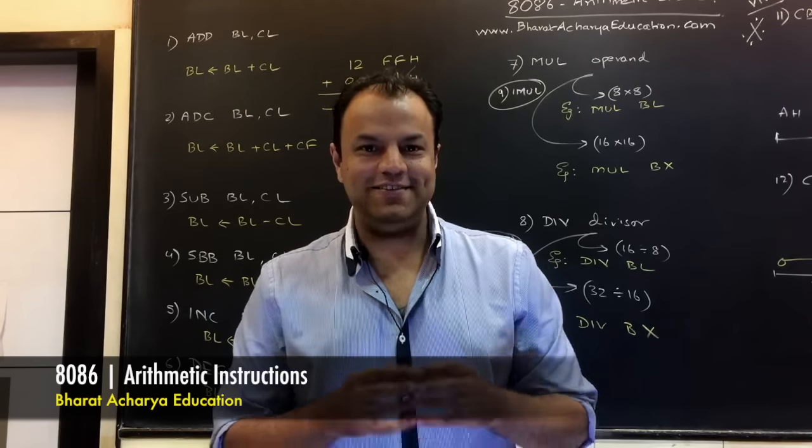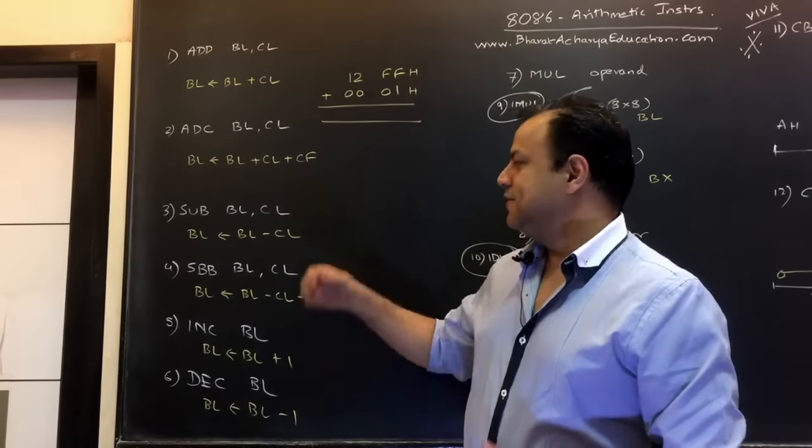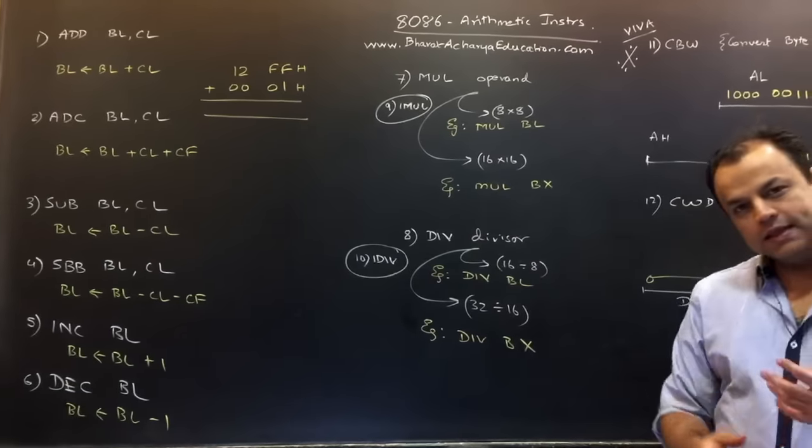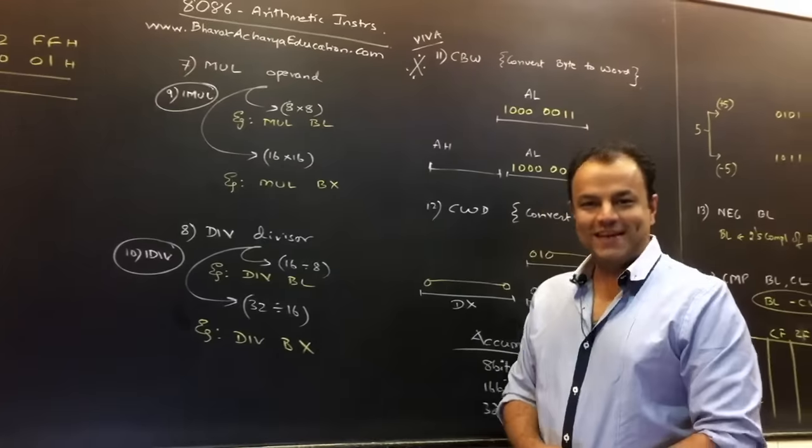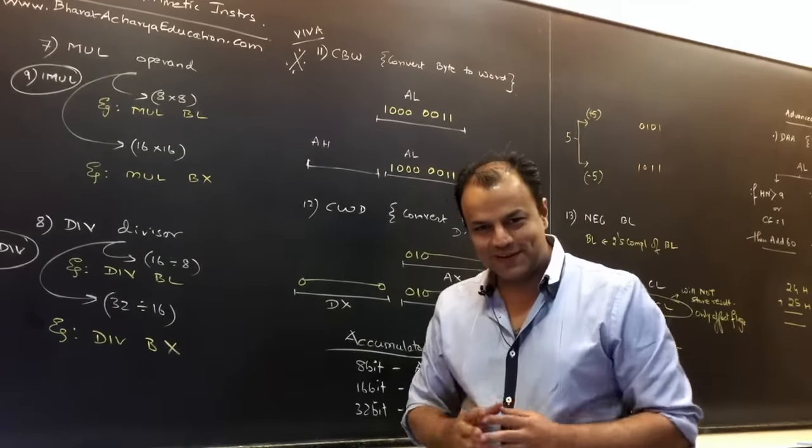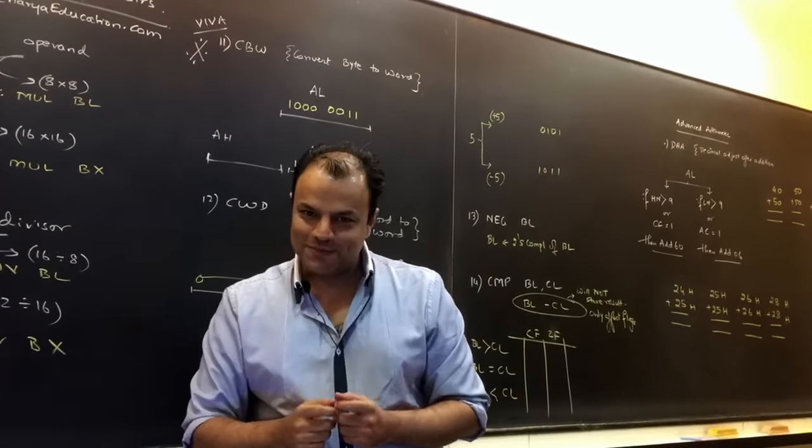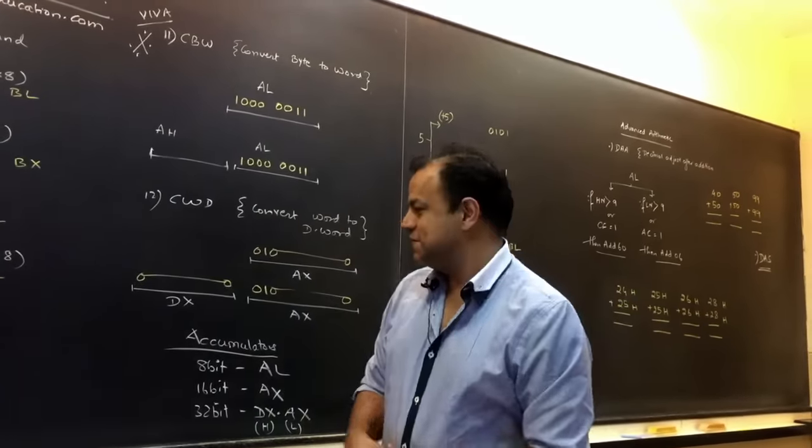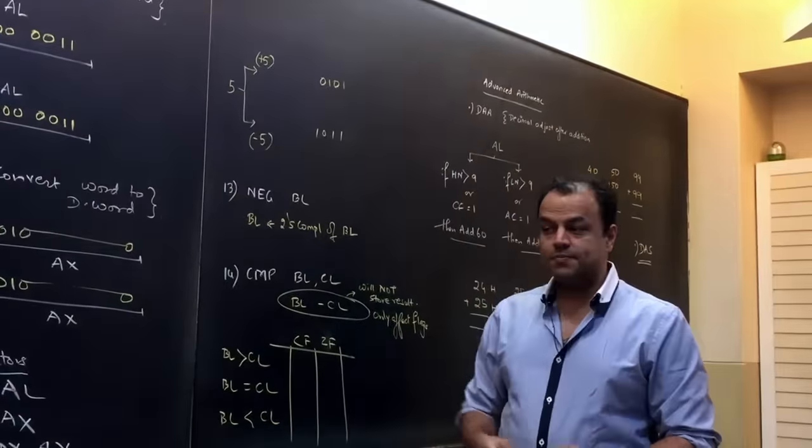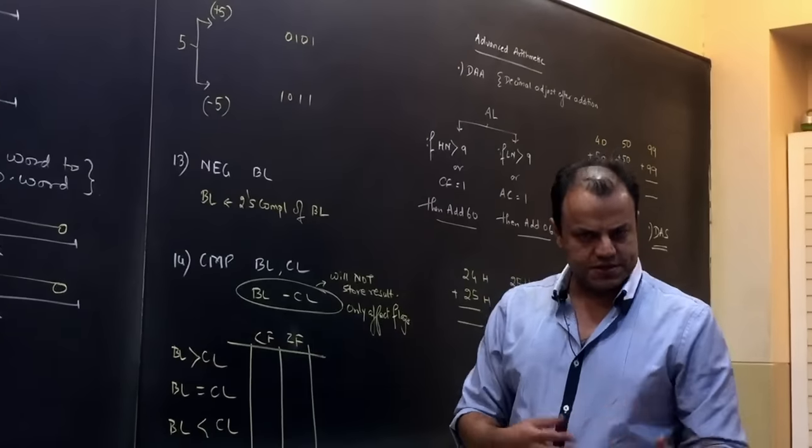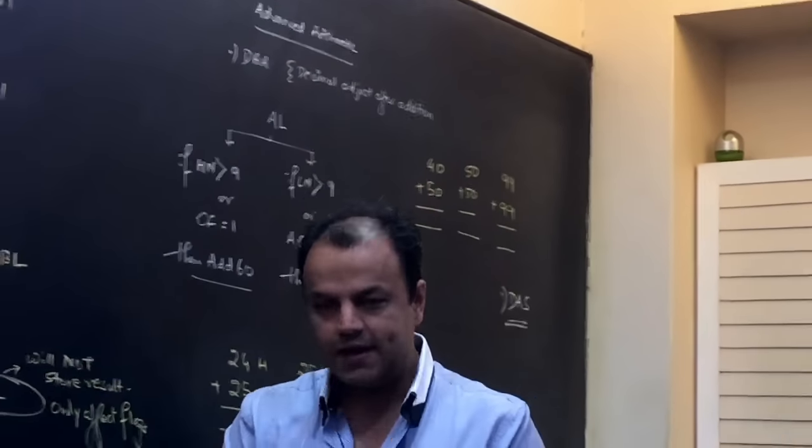So in today's video, we're going to learn 8086 arithmetic instructions. We're going to start with the simplest instructions: add, add with carry, subtract, subtract with borrow, increment, decrement, then the more powerful ones multiply, divide, their signed versions IMUL and IDIV. Then we'll be seeing these instructions which are so popular in oral exams and vivas: CBW and CWD. They have a funny twist to them. Then we'll be seeing negate, compare. Compare and subtract are pretty similar but not the same. And then we'll be looking at the complex arithmetic instructions like DAA, DAS. Anyway, let's start.